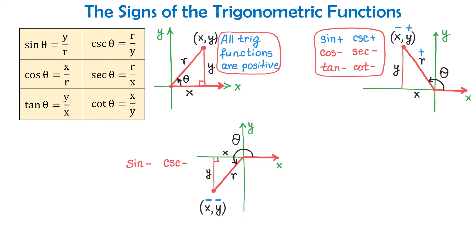Cosine of theta is x divided by r, and negative divided by positive is again negative. And tangent of theta is y divided by x, and negative divided by negative is positive. So in this quadrant, both tangent and cotangent are positive.